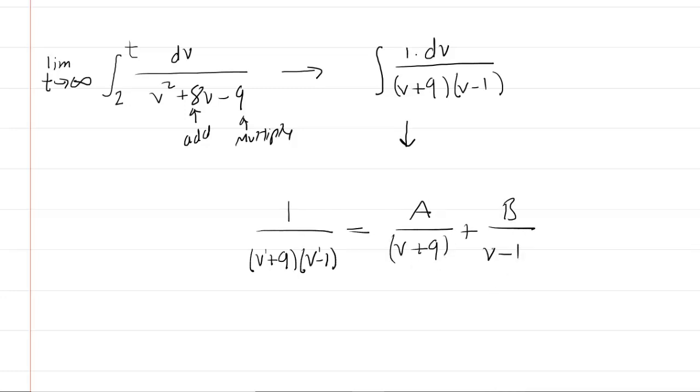And then what we need to do to progress through this is find a common denominator. So for example, the first denominator is missing a factor of v minus 1. So we'll multiply the bottom as well as the top by v minus 1. The next denominator is missing the factor of v plus 9. So we'll multiply bottom and top by v plus 9.